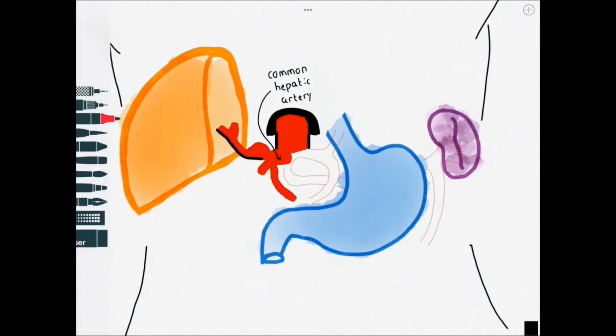However on the way it gets a bit busy and it gives off some other branches. This one that I'm drawing now is the right gastric artery and it finishes the loop or anastomosis with the left gastric artery to complete the blood supply to the lesser curvature of the stomach.